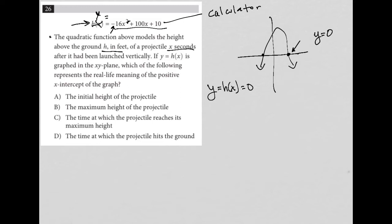So the height is zero when the projectile hits the ground. It's also zero before you launch the projectile. Those are the only two times where the height of the projectile is zero. So let's look at the answer choices and see which one makes the most sense.